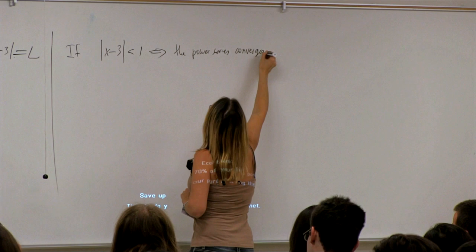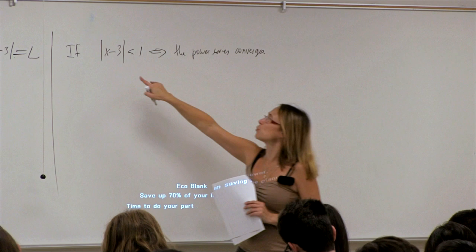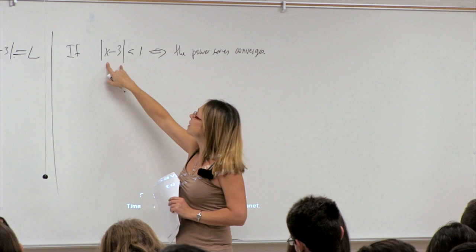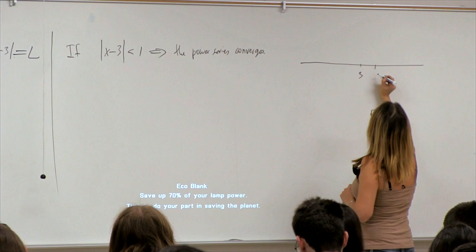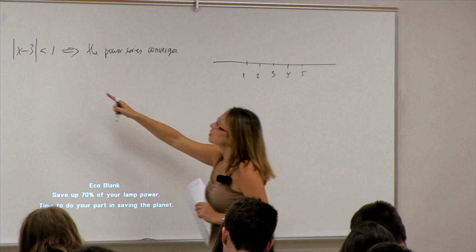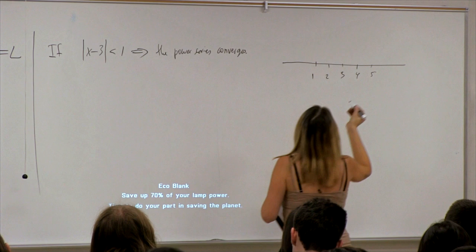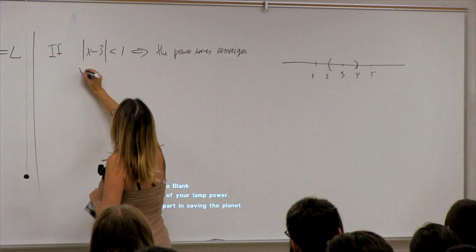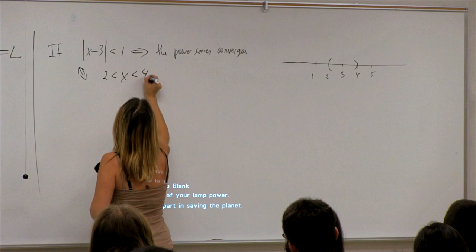What does |x−3| < 1 mean in terms of x? It's the distance of x from the number 3. If we draw this, x closer to 3 than 1 belongs to this interval, which is the same as 2 < x < 4. So the series converges there.